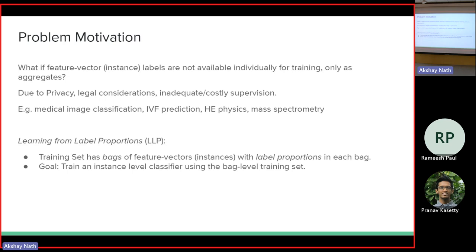There could also be situations where your supervision is costly — someone has to annotate the label for each feature vector in your training set. So maybe you can only estimate the average label for a bunch of feature vectors. This also occurs in many real-world applications. For example, in medical image classification, you may know that roughly speaking, out of these many x-rays, what percentage of them have some disease, instead of knowing whether each individual one has a disease. Or maybe the x-ray itself is divided into many parts and you know the percentage of area that is affected, but you don't know whether each individual part is affected or not.